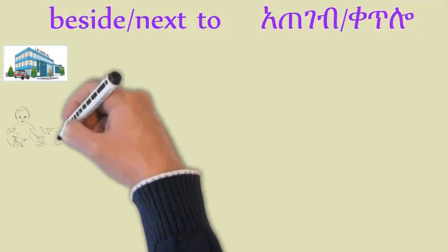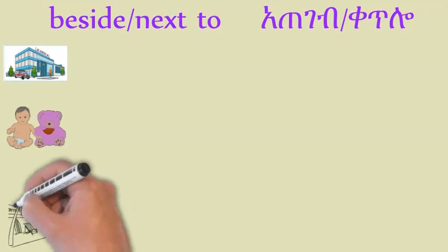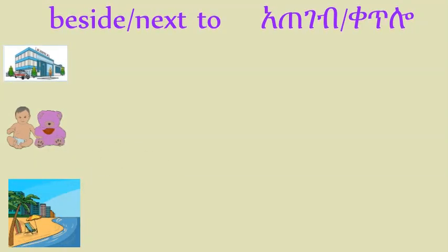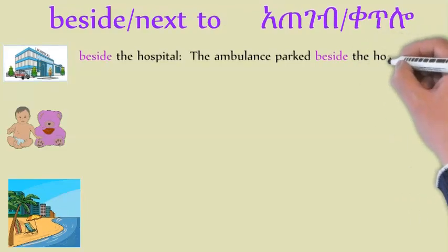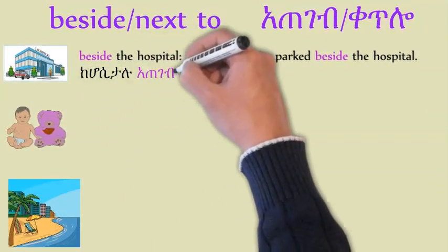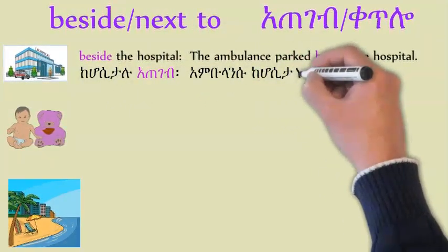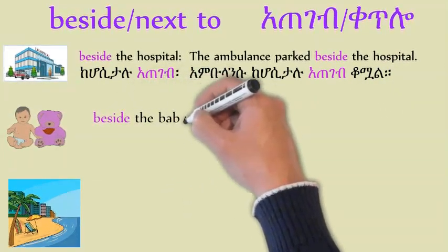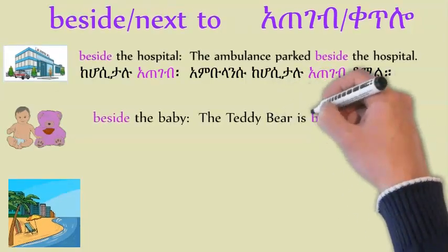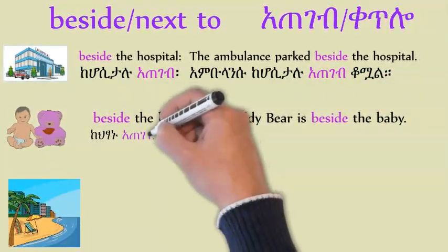Beside or next to. The ambulance is next to the hospital. The teddy bear is next to the baby. The umbrella is next to the beach chair. Beside the hospital — the ambulance is parked beside the hospital. Beside the baby — the teddy bear is beside the baby.